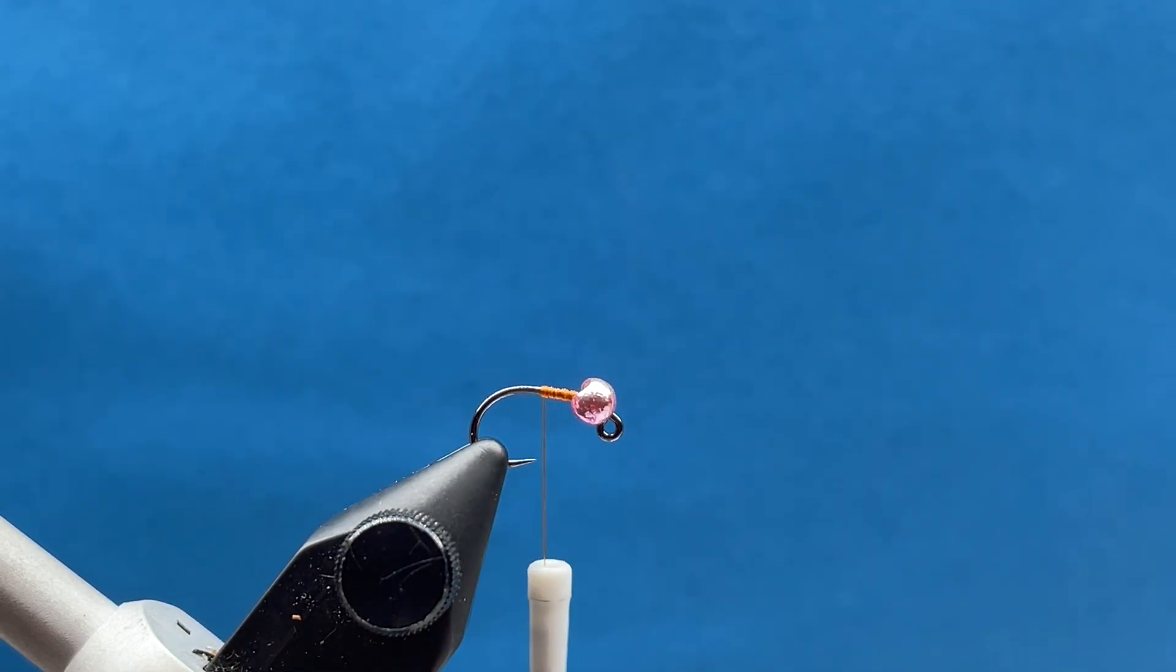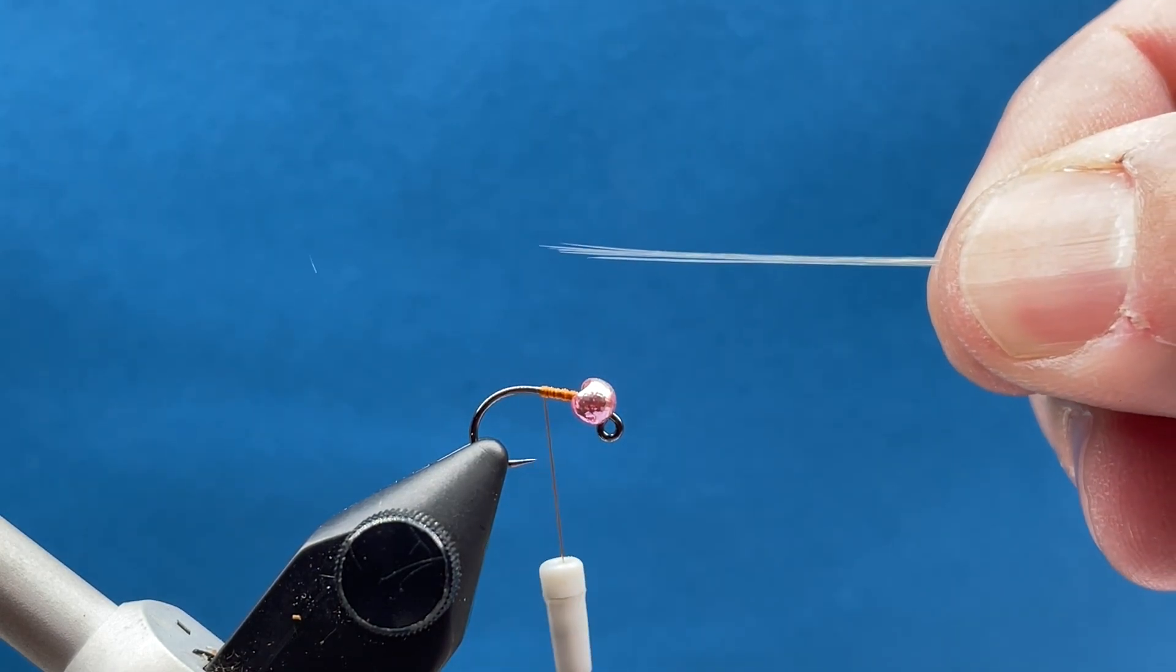Our tail is just going to be the little micro fibets you got in your box, and I just kind of aim for about four of them. I'm just going to pull off a clump there.